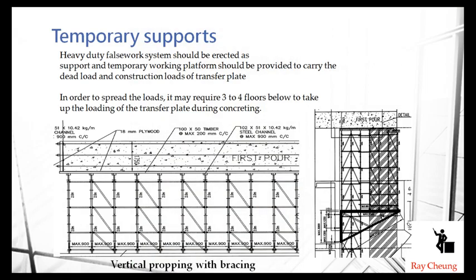During construction, you need to properly design the temporary works. The props need to have adequate vertical capacity. Normally we need a base to prevent lateral movement that could cause the transfer plate to collapse. For example, with a depth of about 2 meters, the dead load and construction load are very large, so we must maintain closely spaced propping. In certain cases where there is not enough space, we can use temporary steel structures to transfer the loads.